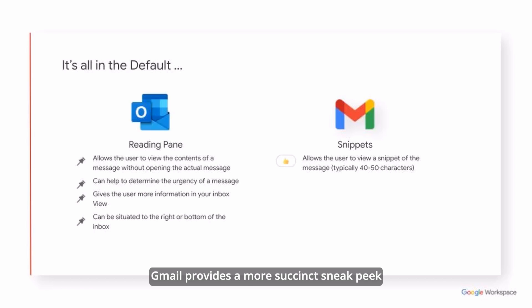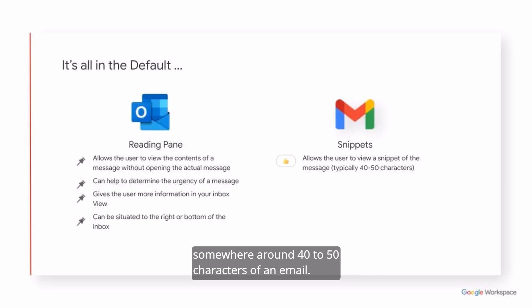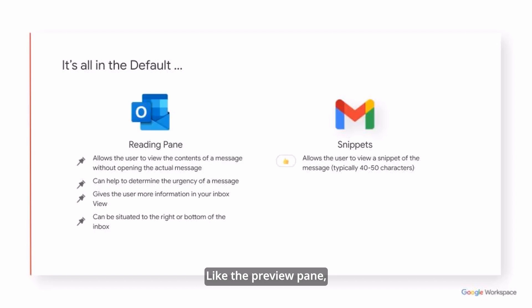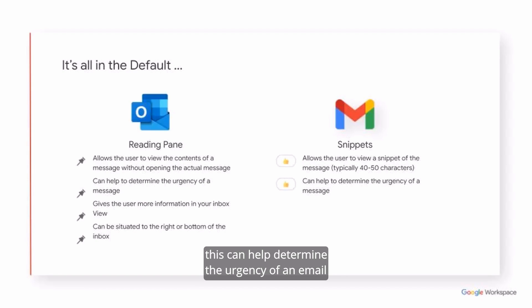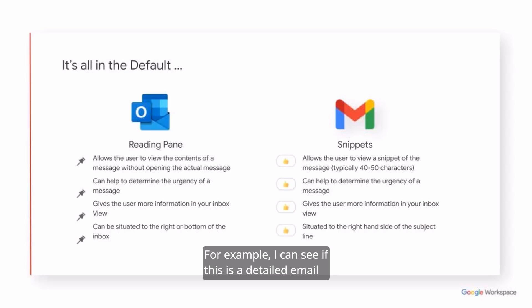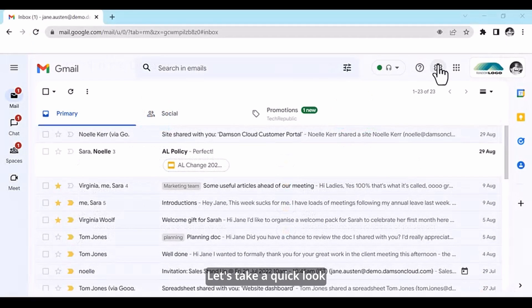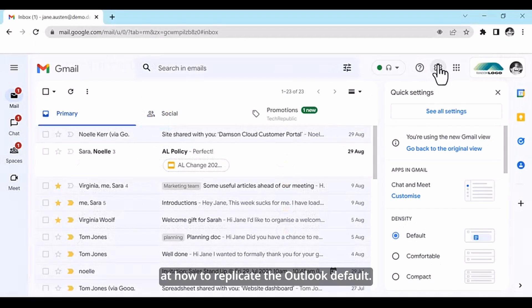Gmail provides a more succinct sneak peek of a mail by way of a snippet. These are also default and allow the user to preview somewhere around 40-50 characters of an email. Like the preview pane, this can help determine the urgency of an email by affording the user more information in the Inbox view. For example, you can see if an email is detailed or simply an acknowledgement of receipt. Let's take a quick look at how to replicate the Outlook default.